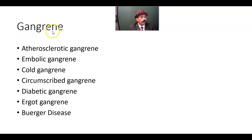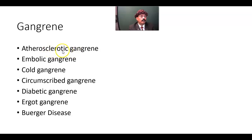We have different types of gangrene. It may be atherosclerotic gangrene, where the blood vessel has been blocked due to atherosclerotic deposition, as part of peripheral vascular disease. It may be associated with peripheral vascular disease plus diabetes mellitus — long-standing, uncontrolled diabetes.